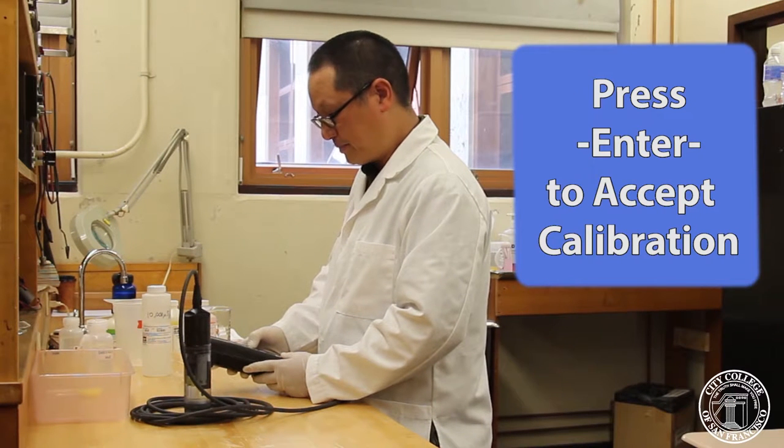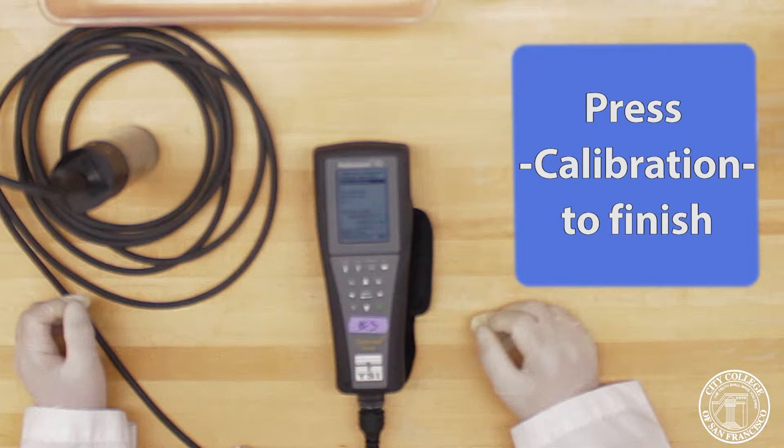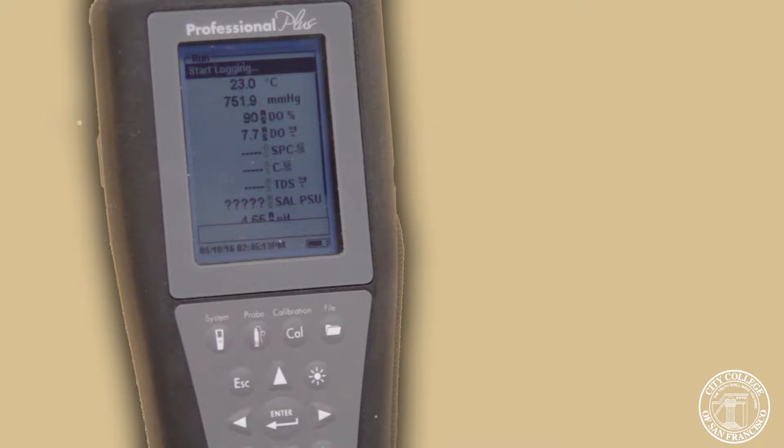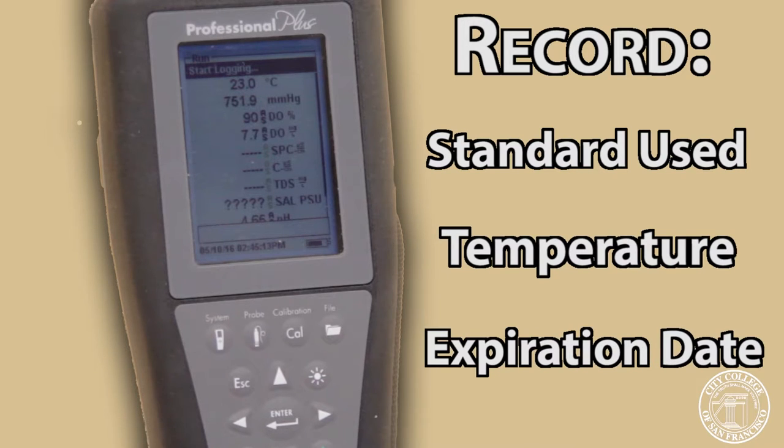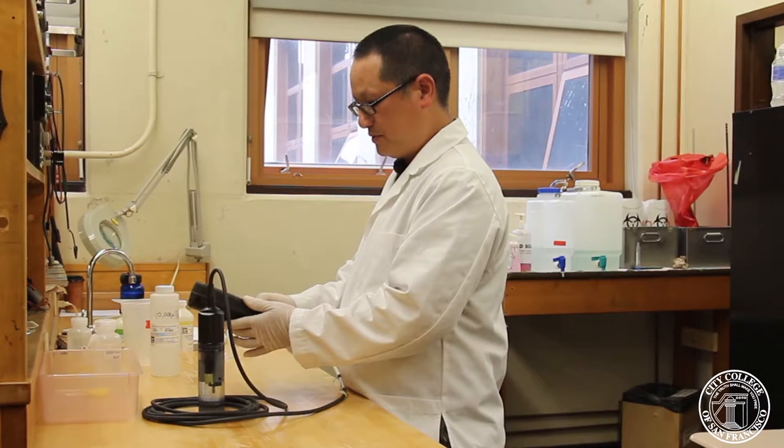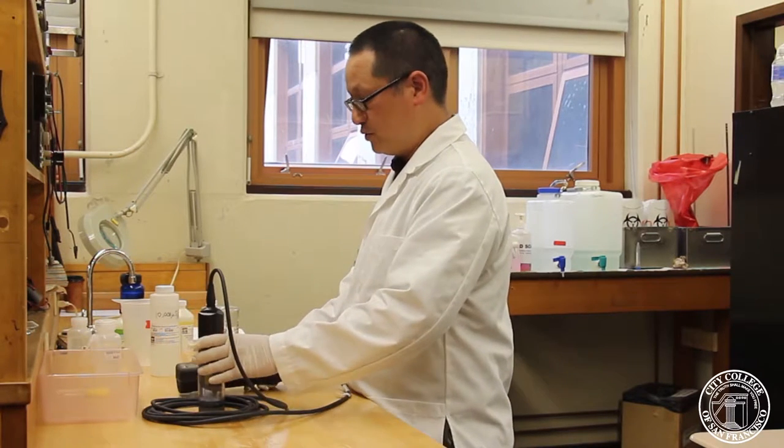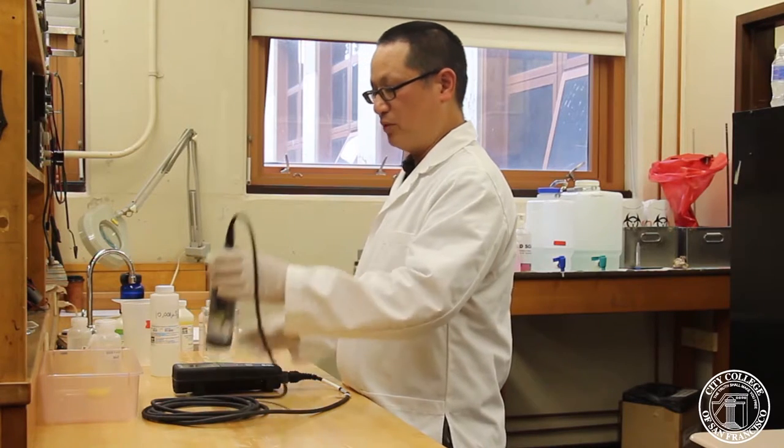We'll then select accept calibration and press enter. Then press cal to finish, and now we're back at the run menu. Once we've finished calibrating, you want to be sure to write the actual readings down and the temperature as well. This brings us back to the run menu, where we can now do a sample run.